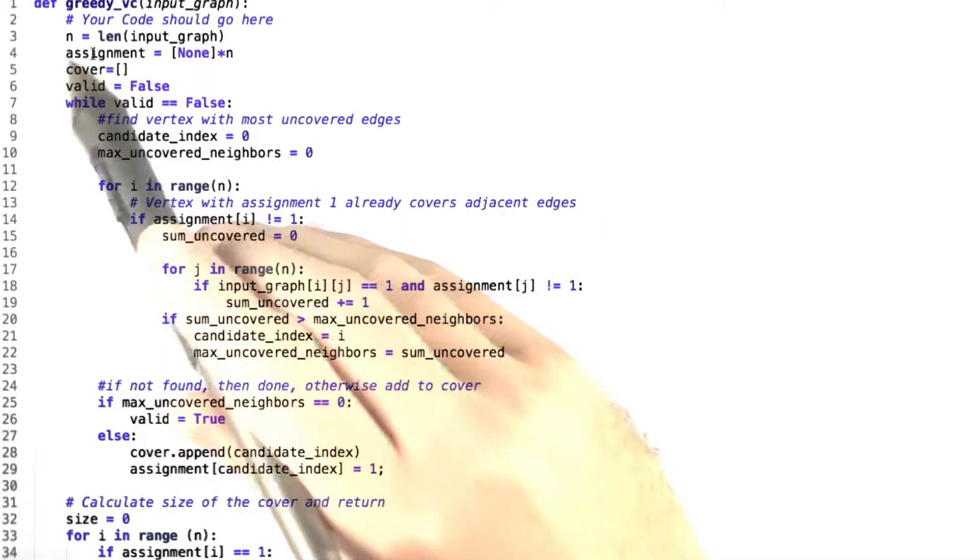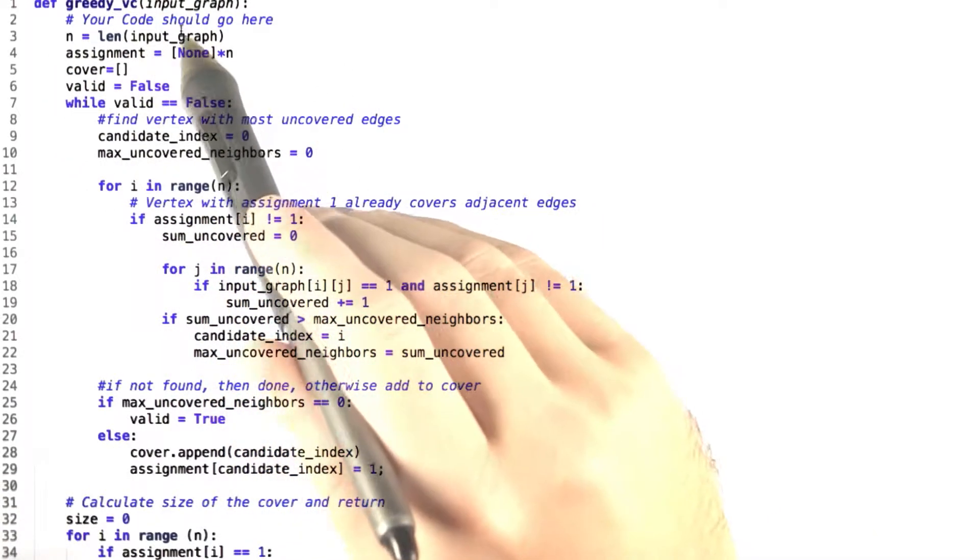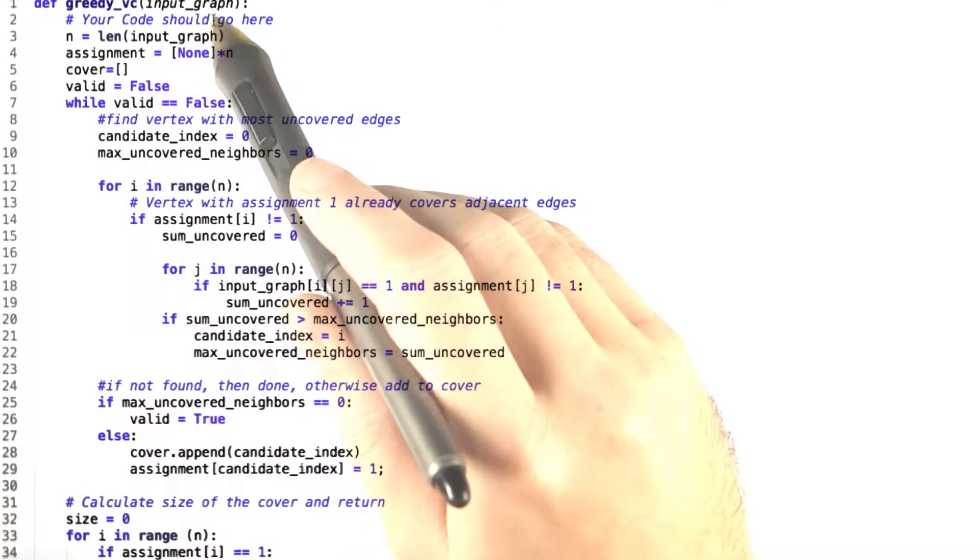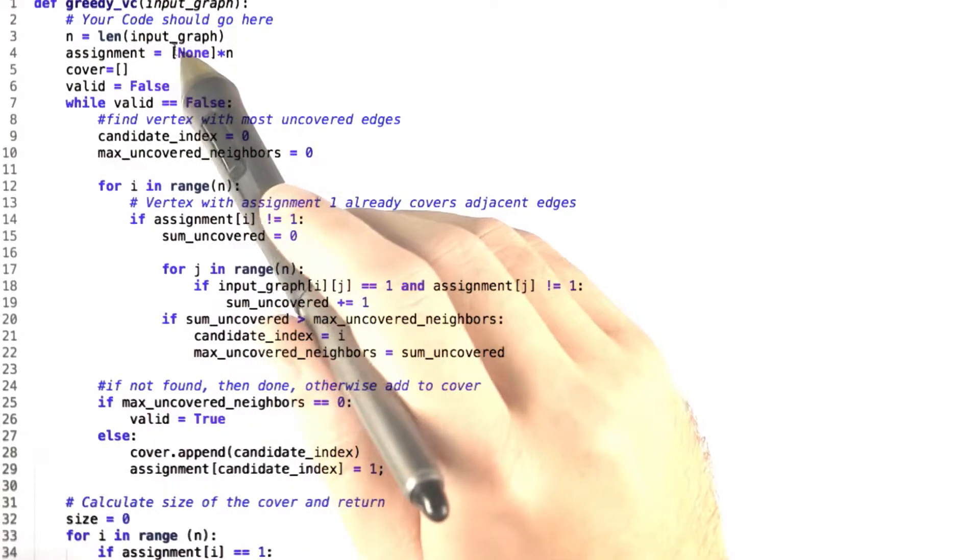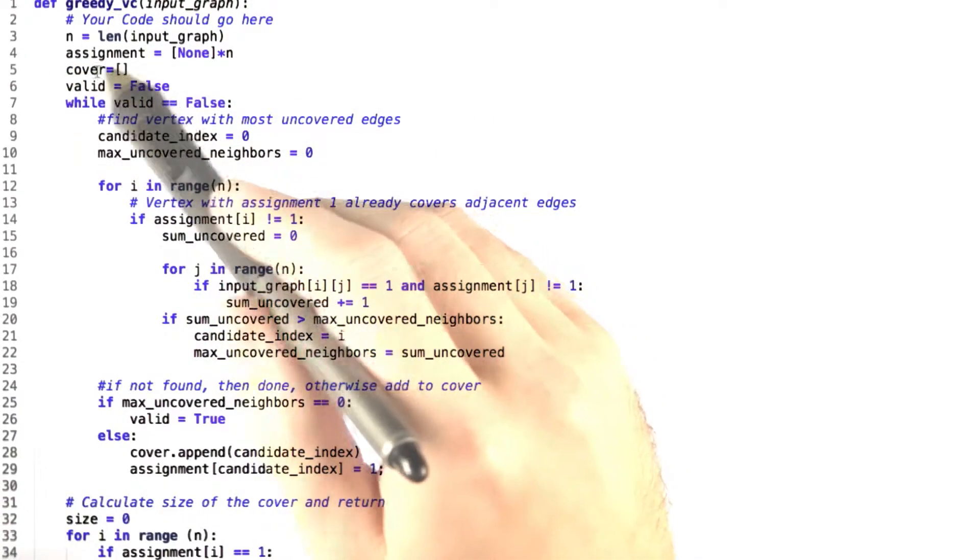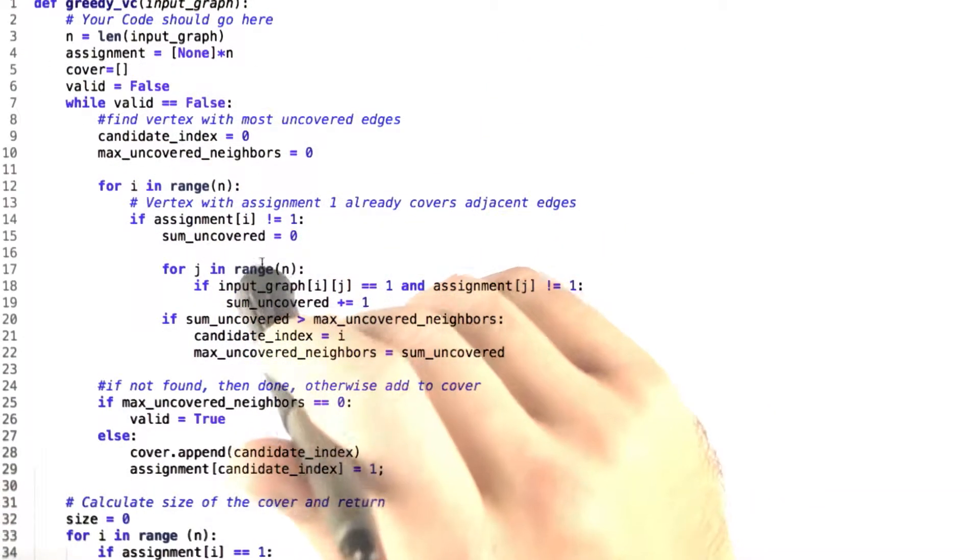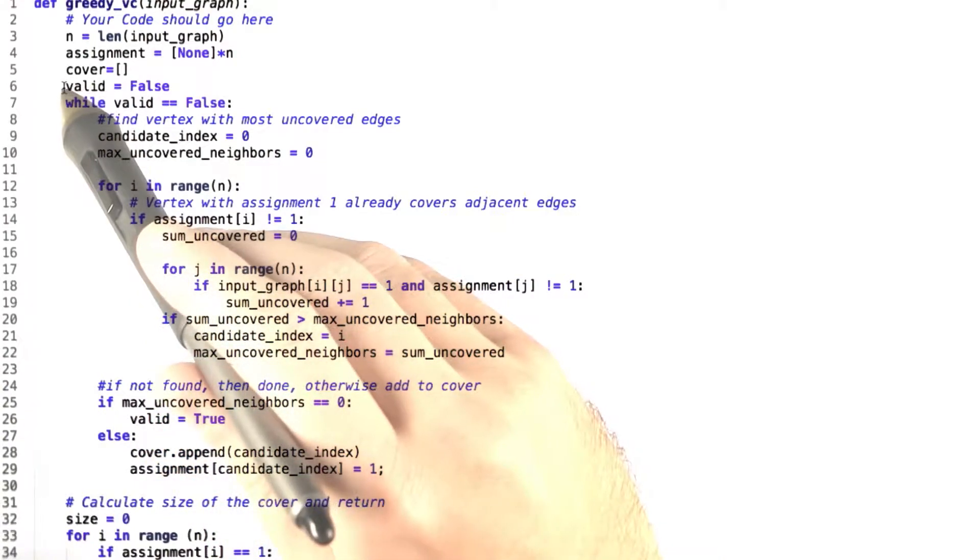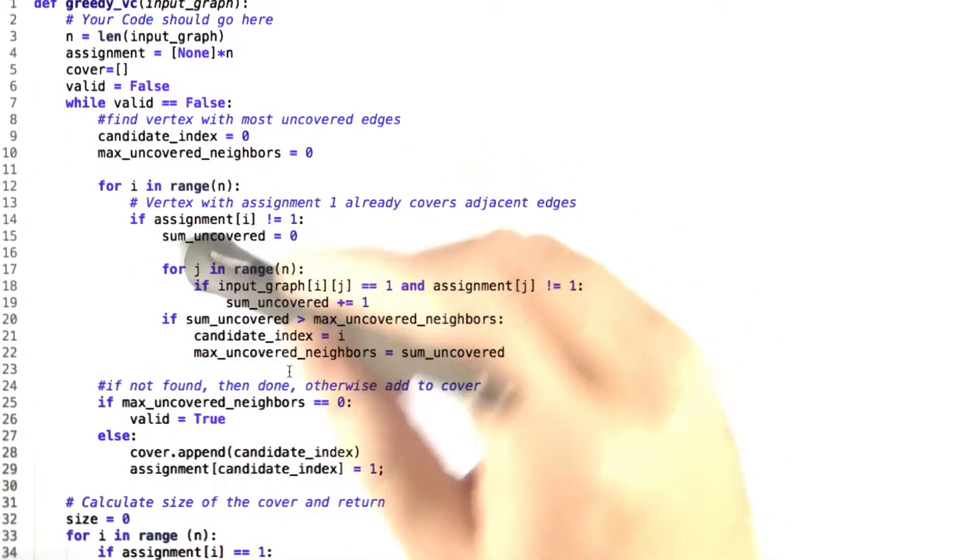Let's walk through this code. So first we set n equal to the length of the n by n adjacency matrix that we took as input. And we set assignment to be n nones, a list of n nones. And we initialize the cover to be the empty list since we haven't actually set a cover yet. And we start valid off as false so that we can start this while loop going.